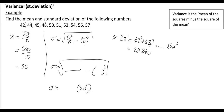Now we can substitute everything into the formula. Σx² = 25,240, n = 10, and x̄ = 50. Working that out gives a standard deviation of 4.90 to three significant figures, which is the normal precision to give in a statistics exam. Now let's look at how to do this on the calculator.